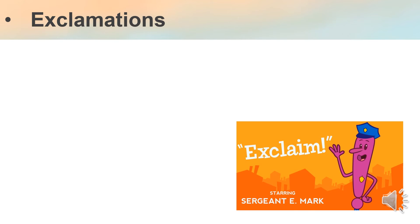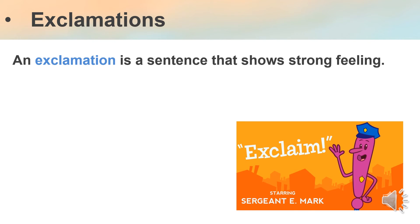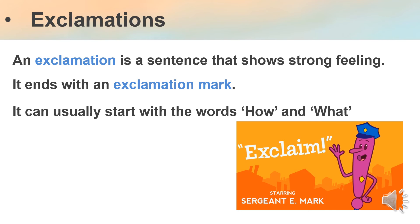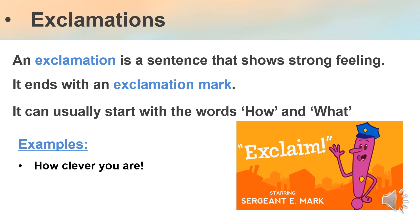The last type is exclamations. An exclamation is a sentence that shows strong feeling or strong emotion. It ends with an exclamation mark and it can usually start with the words "how" and "what." Be careful — it's not a question; you will not see that it's asking about something by using "how" or "what." For example, "How clever you are!" — this is an exclamation sentence. It ends with an exclamation mark and shows strong feeling. I'm very surprised at how clever the person is, so I'm showing my emotions. It started with "how" but it's not asking a question.